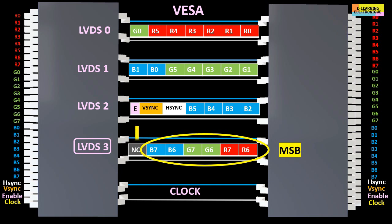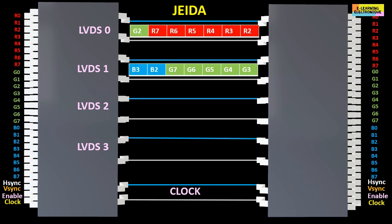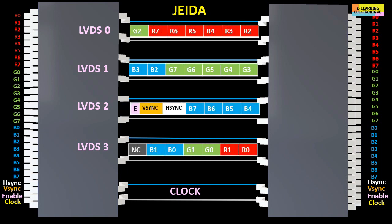Sometimes we can find the letter R, or RSV, which means reserved. For the JEIDA standard, the order of the color bits is different. On the pair of cable LVDS 3 are grouped all the two bits of LSB of each color, contrary to the standard VESA, where it was the two bits MSB.